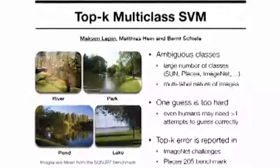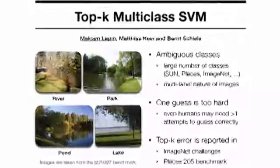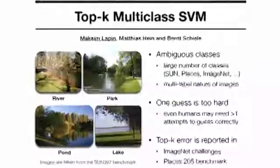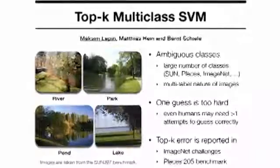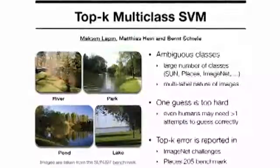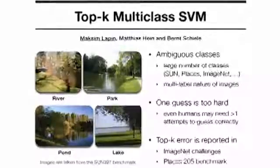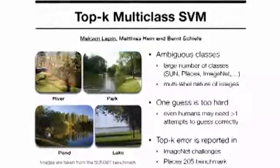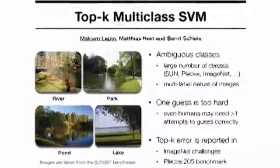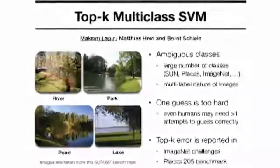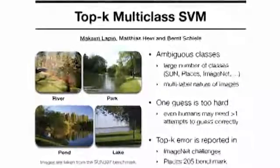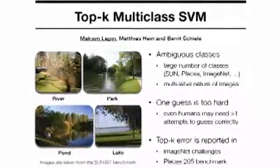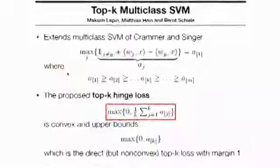This is what we call ambiguous classes and they typically appear in problems with a large number of categories, which we can expect to be even more common in future. Note that this is not just a few outliers due to label noise, because some images are inherently multi-label. For example, there may be a river in a park. But also, there is not always a clear cut between the classes, like between the pond and the lake. In that case, it is sometimes difficult even for humans to guess correctly on the first attempt. Therefore, it makes sense to allow a few guesses.